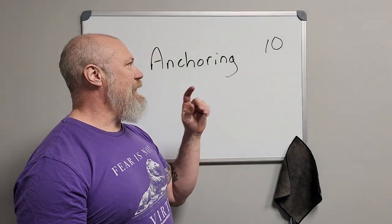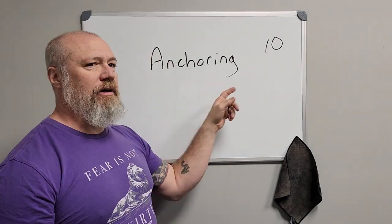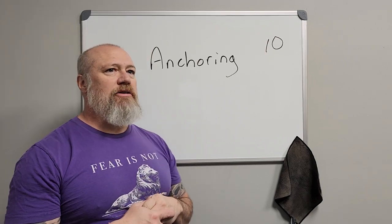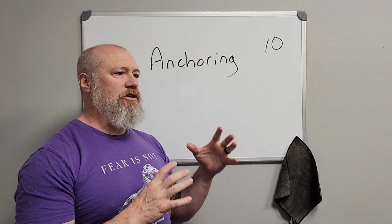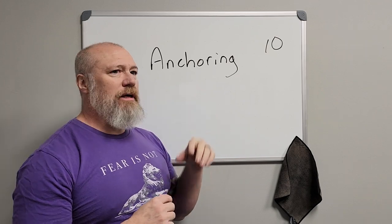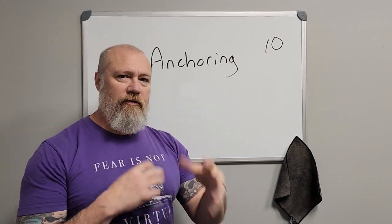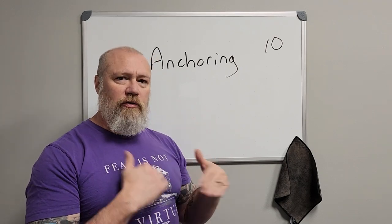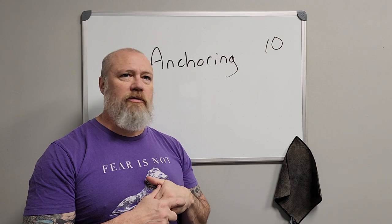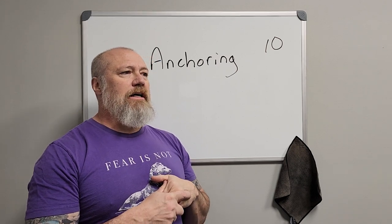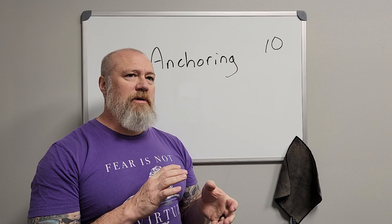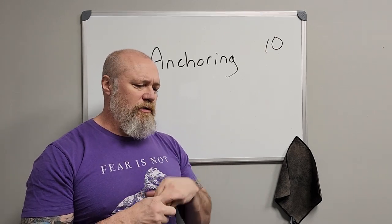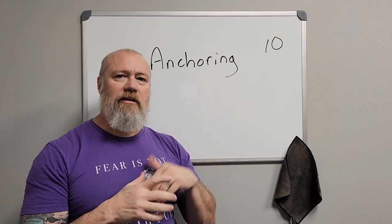Cognitive bias number 10: anchoring. This is another big one, like the selection or confirmation bias talked about earlier. Human beings are narrative animals — we have this continually running internal self-narrative; we're the star of our own story. We also tend to be associative, which ties into the availability bias covered in another video.